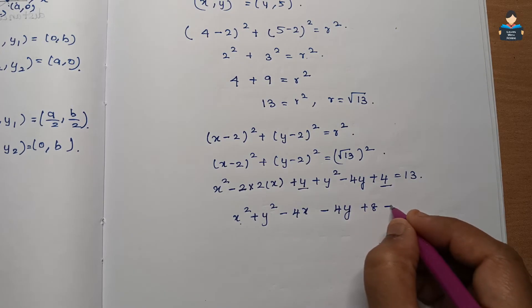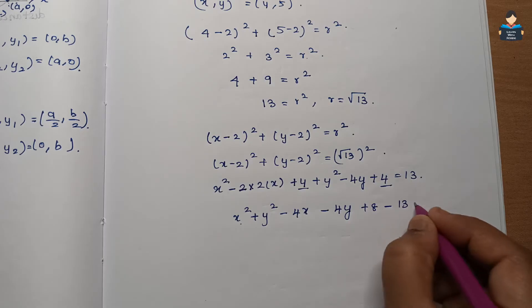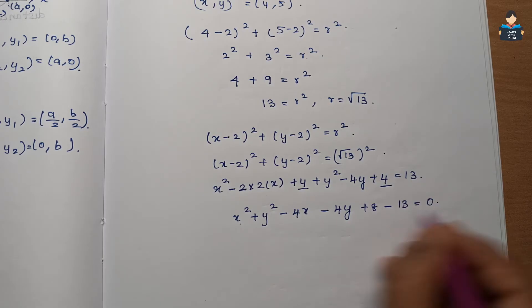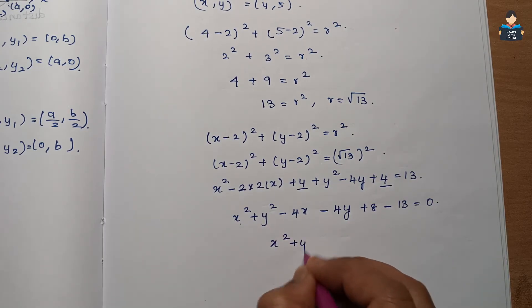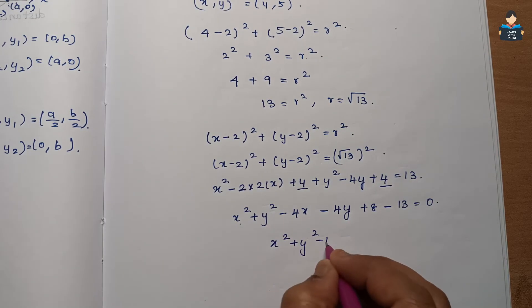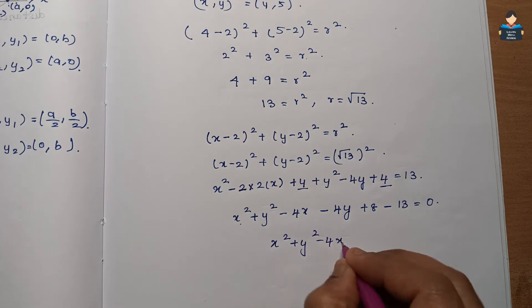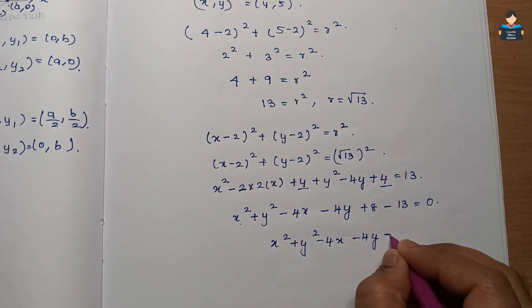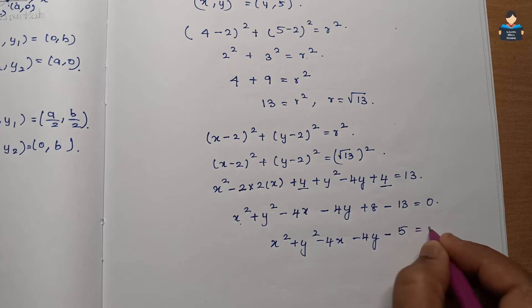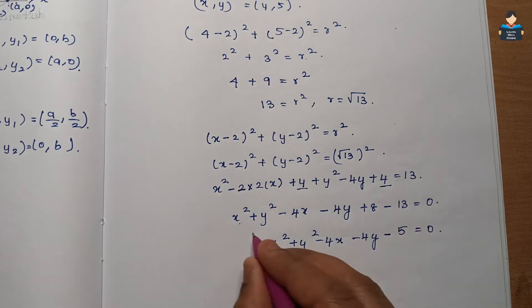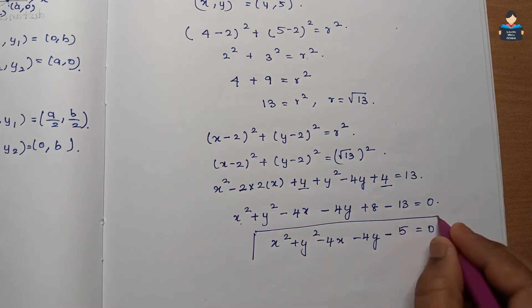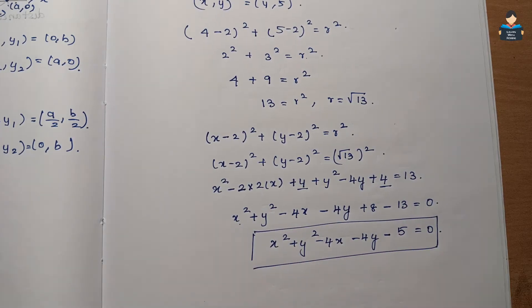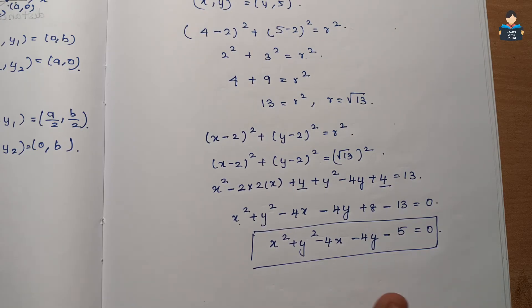...plus 8 - 13 = 0. So x² + y² - 4x - 4y - 5 = 0. This is the required equation of the circle.